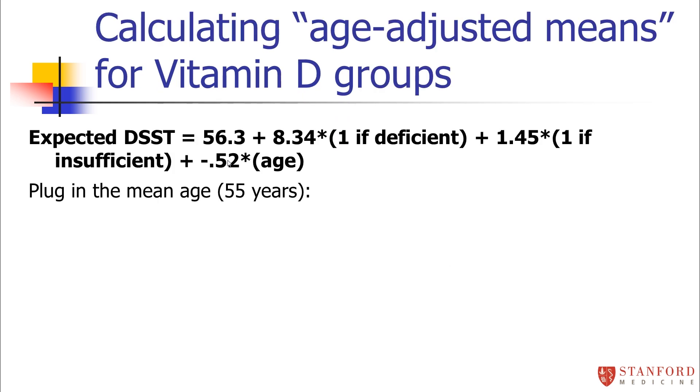And I can calculate these age-adjusted means. The easiest way to calculate the age-adjusted means is just to imagine that everybody has the same age. You have to pick an age to plug into the model. So, let's plug in the mean age for the whole data set, which was here, 55 years old.